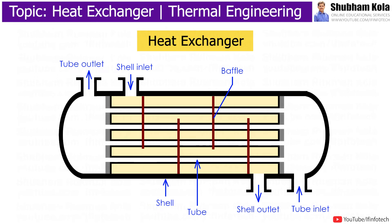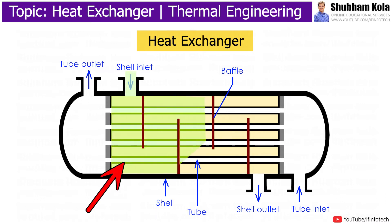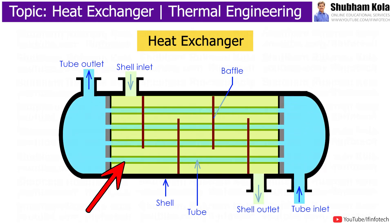In this video, we are going to discuss about what is the working of a heat exchanger and what are the types of heat exchangers used in power plants. The heat exchanger is a system used for transferring heat from one medium to another, used in both situations where cooling or heating is required.